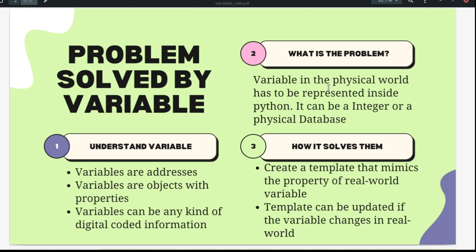The data can be as simple as an integer, or it could be as complicated as a physical database, your location, or spacecraft information. Whatever those physical things are, a variable must be able to store them. You can think of a variable as capable of storing everything and anything.